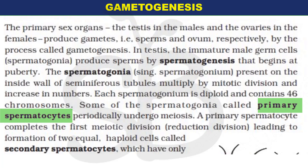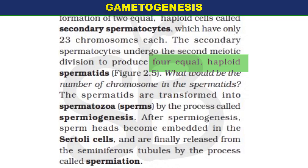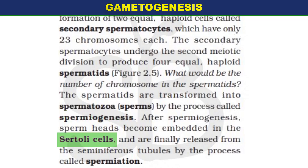The primary spermatocytes then undergo meiosis I. The cells move from a diploid condition to a haploid condition — the chromosome number goes from 46 to 23. Secondary spermatocytes are formed in haploid condition. Meiosis II then produces spermatids, also haploid with 23 chromosomes. These spermatids are then transformed into spermatozoa — this transformation process is called Spermiogenesis.